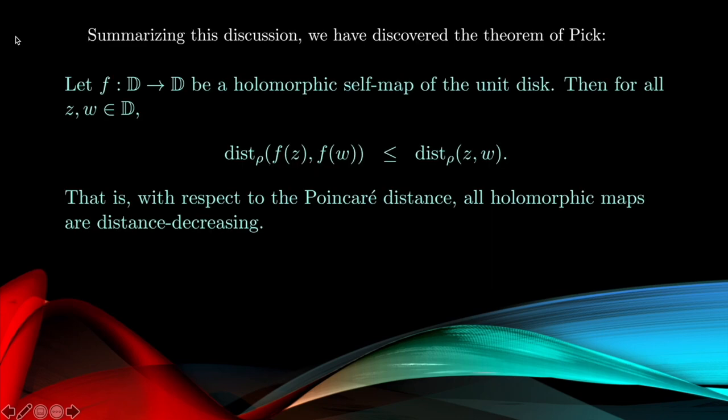Now this has some important consequences, because what we see now is that the content of the Schwarz lemma is not actually about holomorphic maps; it's about the distance function. It's about the distance function associated to the Poincaré metric. So that's the sense in which we want to think of this as a divergence in the development.